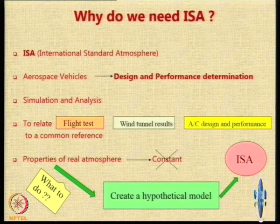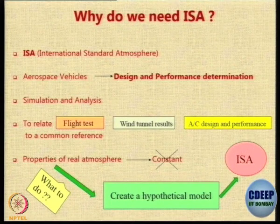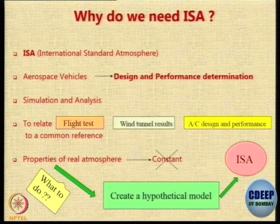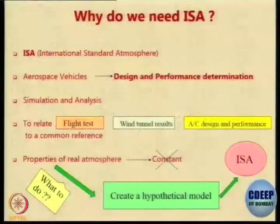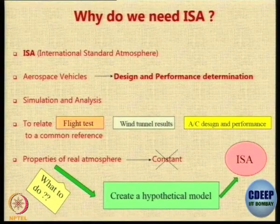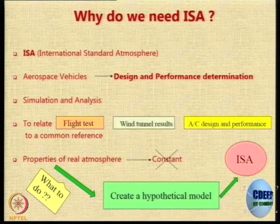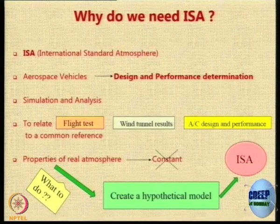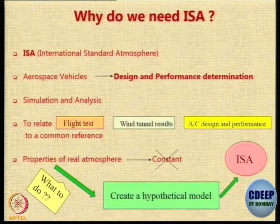The properties of the atmosphere are not constant — they are different from place to place, country to country, and season to season in the same place. The solution is to create something hypothetical which everybody follows, and that hypothetical atmosphere is called the International Standard Atmosphere. It is absolutely hypothetical — there may not be any place in the world where the temperature profile follows what is given in ISA. Many people say that the ISA is modelled around the temperature in Northern America — somewhat true, but not exactly true.